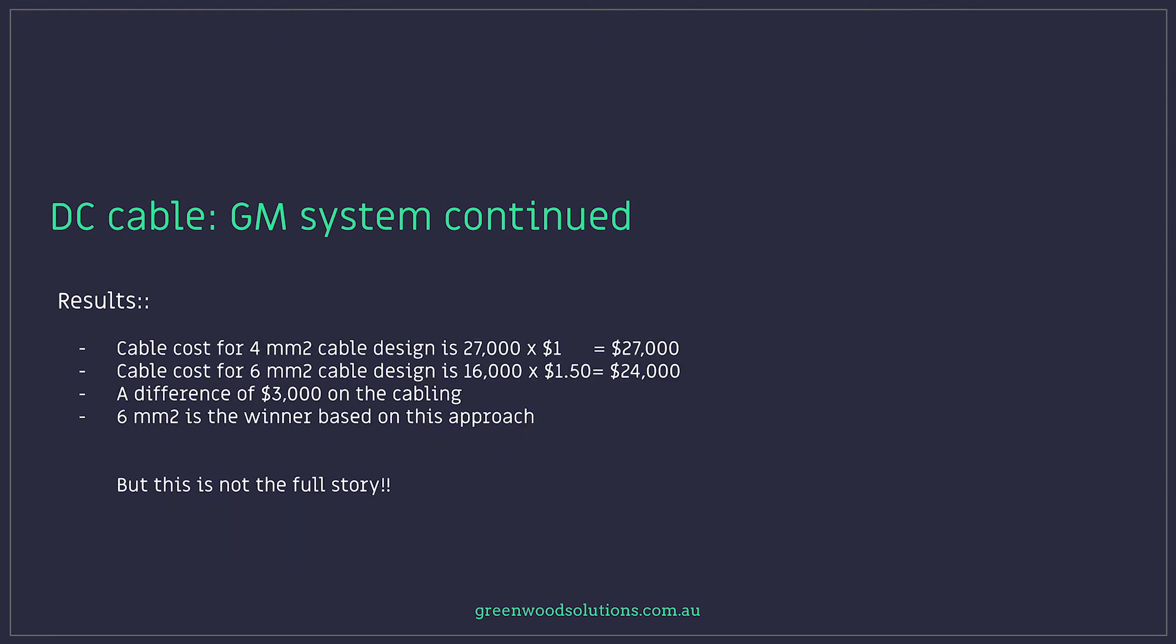The cable cost for 4mm squared is 27,000 meters times $1.00 so $27,000 for 4mm cable on that design. The cable cost for 6mm squared cable design is 16,000 meters times $1.50 because it's $1.50 per meter for 6mm and that's $24,000.